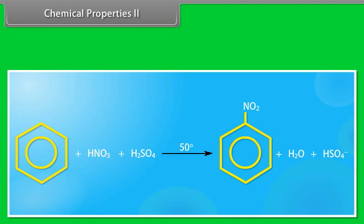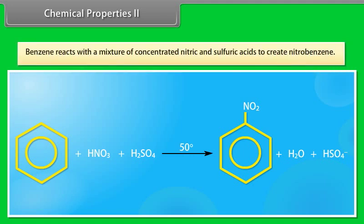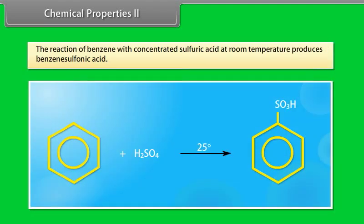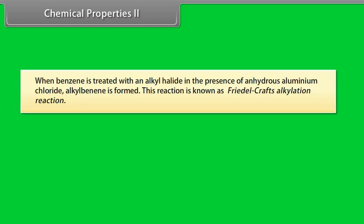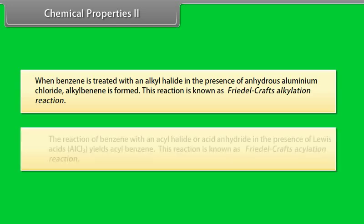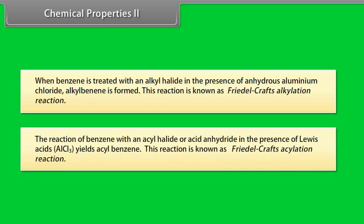In another example of electrophilic aromatic substitution, benzene reacts with a mixture of concentrated nitric and sulfuric acids to create nitrobenzene. The reaction of benzene with concentrated sulfuric acid at room temperature produces benzene sulfonic acid. When benzene is treated with an alkyl halide in the presence of anhydrous aluminum chloride, alkylbenzene is formed — this is known as Friedel-Crafts alkylation. The reaction of benzene with an acyl halide or acid anhydride in the presence of AlCl3 yields acylbenzene — this is known as Friedel-Crafts acylation.